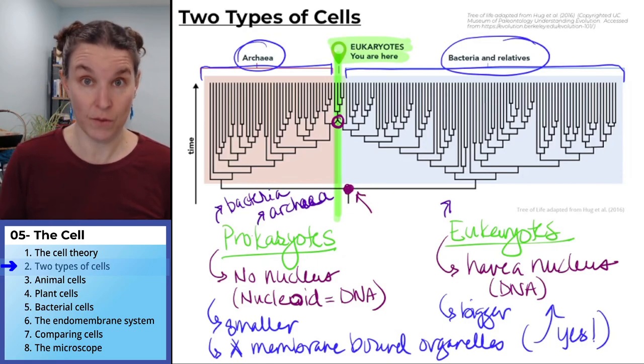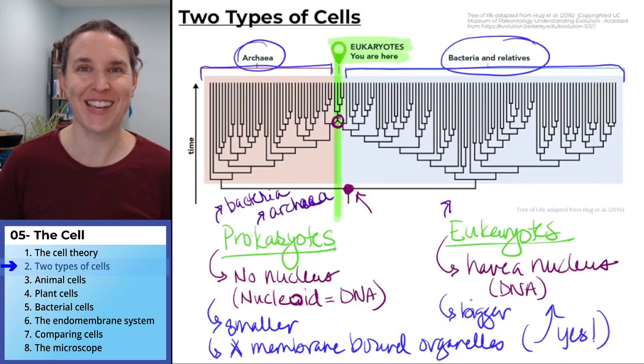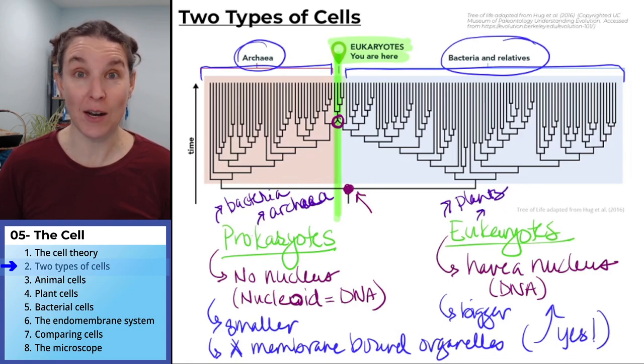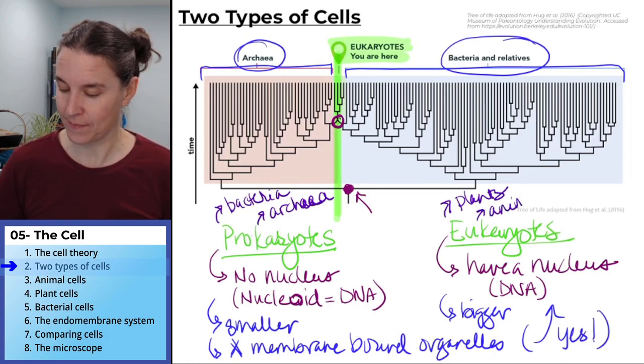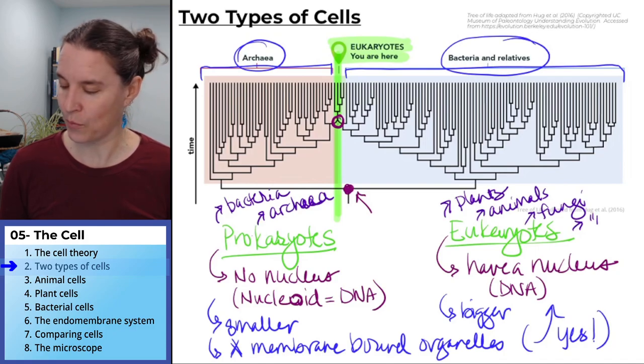Eukaryotes, the four that we're going to know, are plants, animals, fungi, and watch, I'm putting this in quotations, protists.